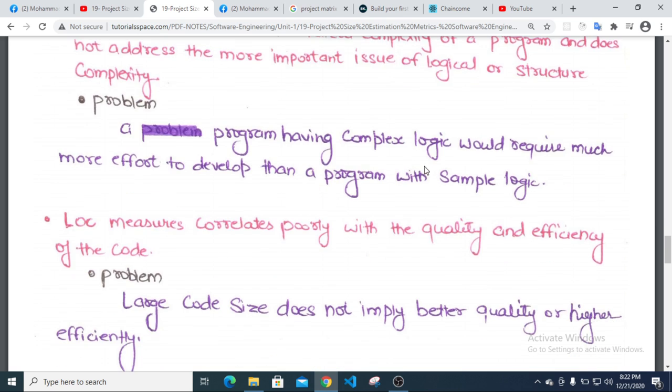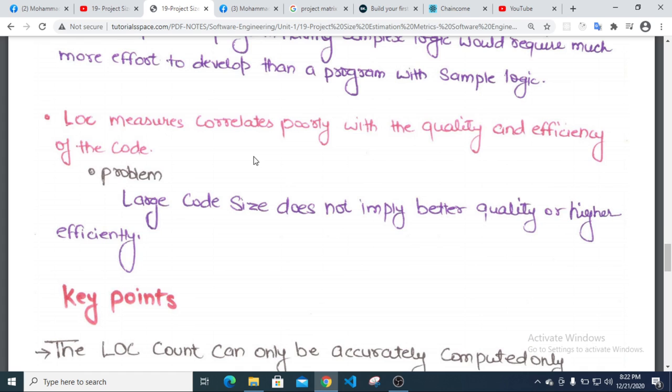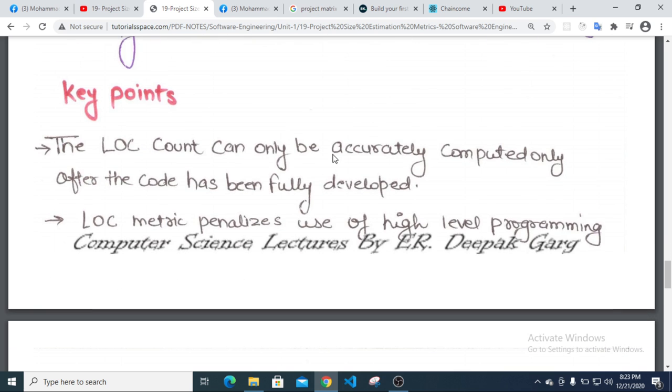LOC measures correlate poorly with the quality and efficiency of the code. Small code size does not imply better quality or higher efficiency. LOC can only be accurately computed after the code has been fully developed.